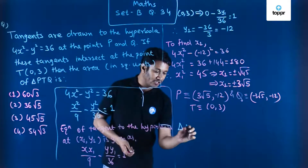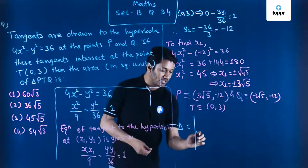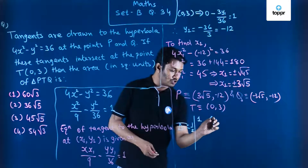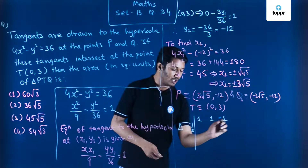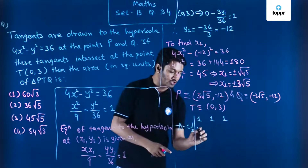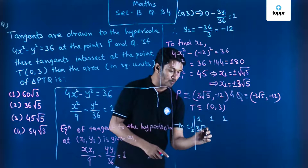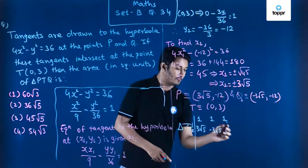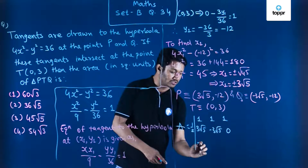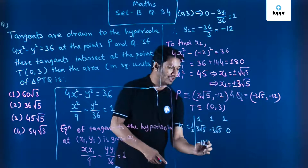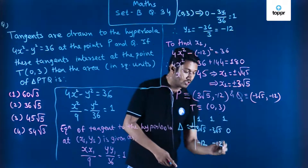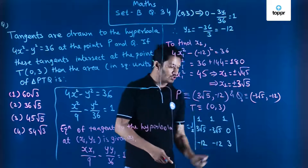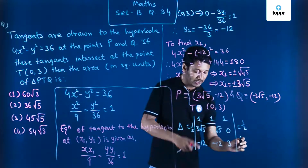The area of the triangle delta equals half times the determinant. The first row is all ones. The second row contains the x-coordinates: 3√5, -3√5, and 0. The third row contains the y-coordinates: -12, -12, and 3.